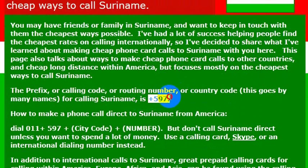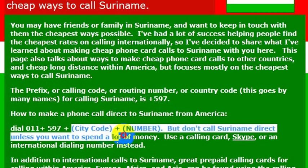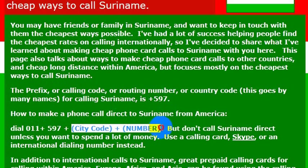Again, 597 is the country code. So to call from the United States, you would dial 011, which is the international dialing code. Then you would dial 597, which is the country code, and then you would dial the phone number you are trying to reach.